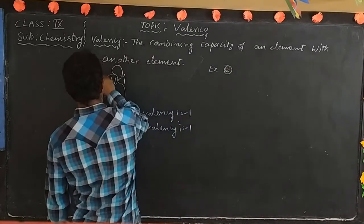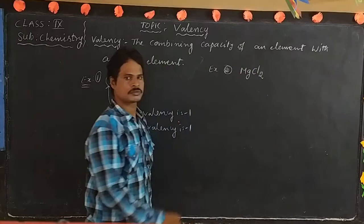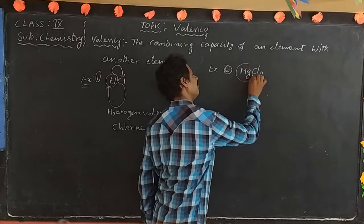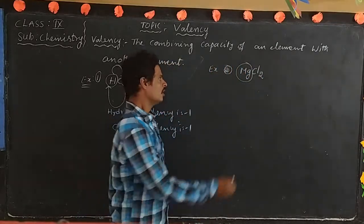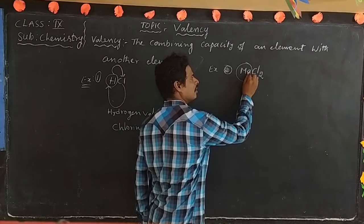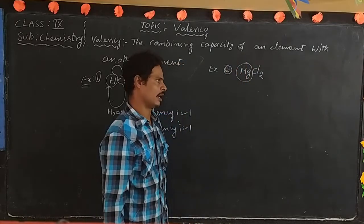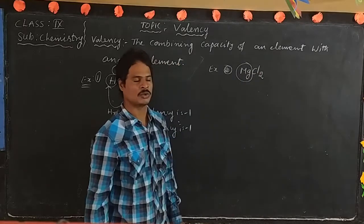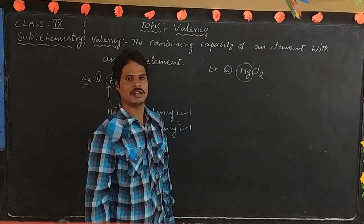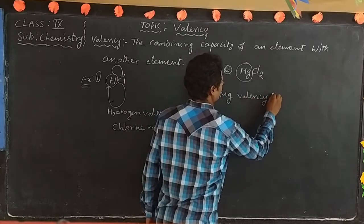Example two: magnesium chloride. If you want magnesium valency, what is the valency of magnesium? How many chlorine atoms attach to magnesium? One magnesium combines with two chlorine atoms. Two chlorine atoms attach to one magnesium atom. That is why magnesium valency is two.